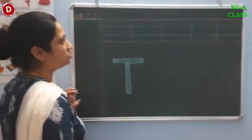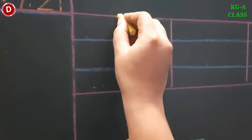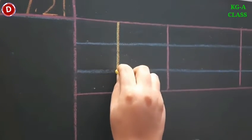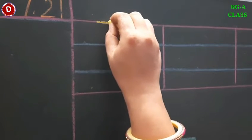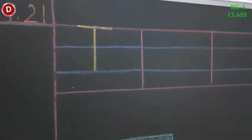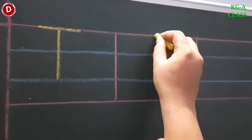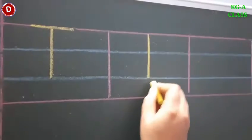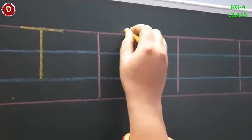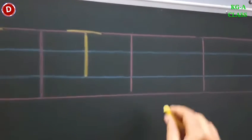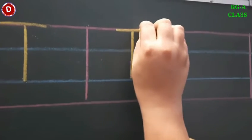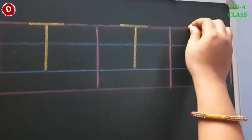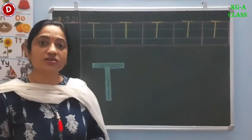Children, first I will write on the board which you have to watch carefully. Put your pencil on the red line, children. From here you have to make a standing line till the second blue line — see like this — then a sleeping line like this. And this is capital T. In this way, children, you have to write. Now see, I am writing in the second block. A standing line from the red line to the second blue line, then you have to make a small sleeping line like this. It is quite easy, isn't it?